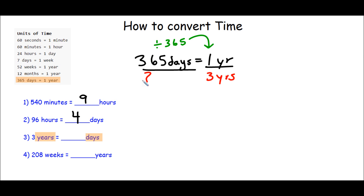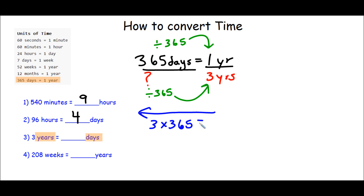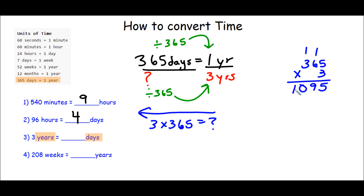Because any number divided by itself equals 1, that means this missing number divided by 365 gave me 3. I'm going to use inverse operations — working the problem backwards to find the missing number. So I can say 3 times 365 will give me the missing number. Let's do that math: 365 times 3. 3 times 5 is 15, carry the 1. 3 times 6 is 18, plus 1 is 19, carry the 1. 3 times 3 is 9, plus 1 is 10. So there are 1,095 days in 3 years.